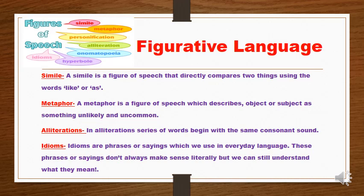Now, students, before doing the worksheet on identifying figurative language from the story, let us do a quick recap on what figurative language is and what the different types of figurative language are. The first one is simile. A simile is a figure of speech that directly compares two things using the words 'like' or 'as.' For example, 'he is as funny as a monkey.'